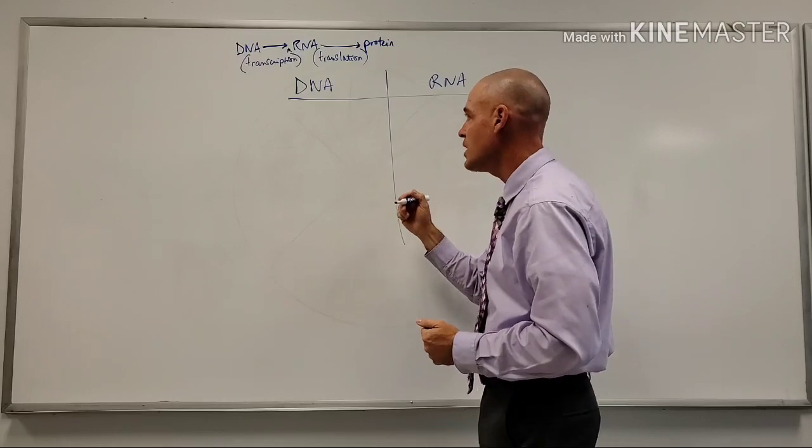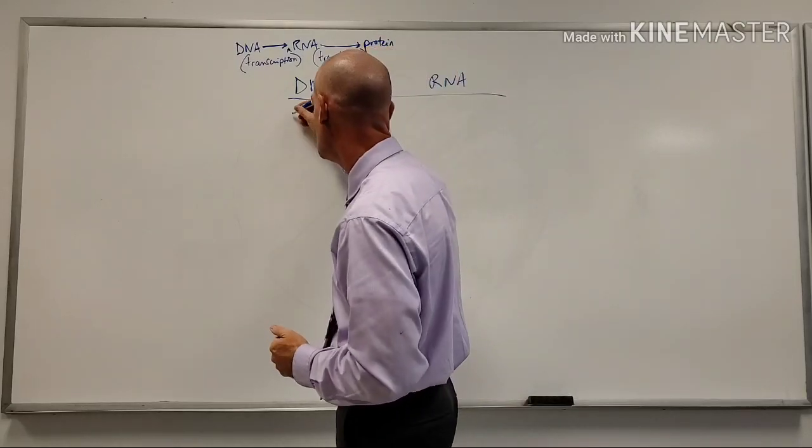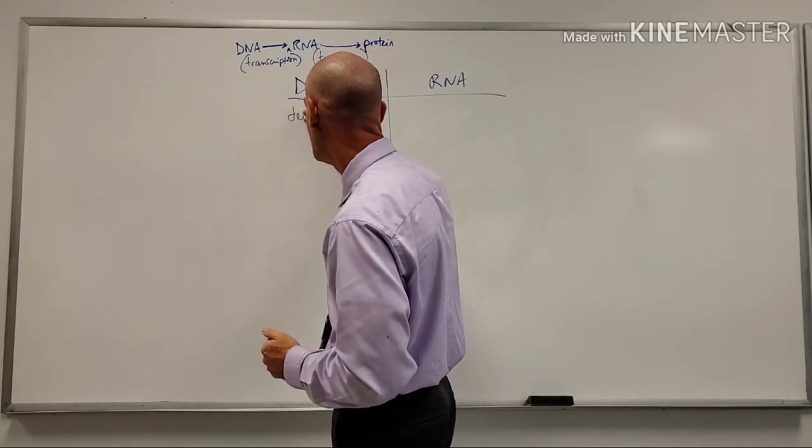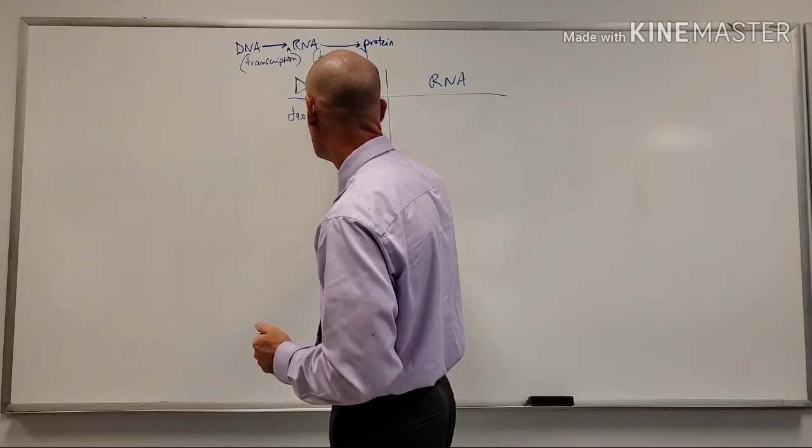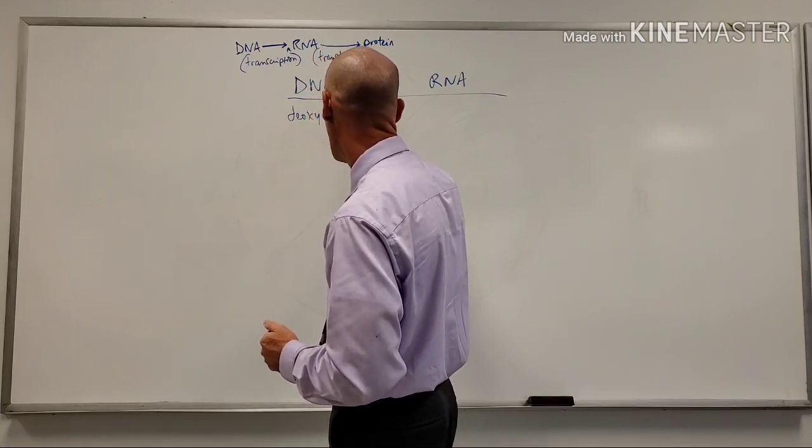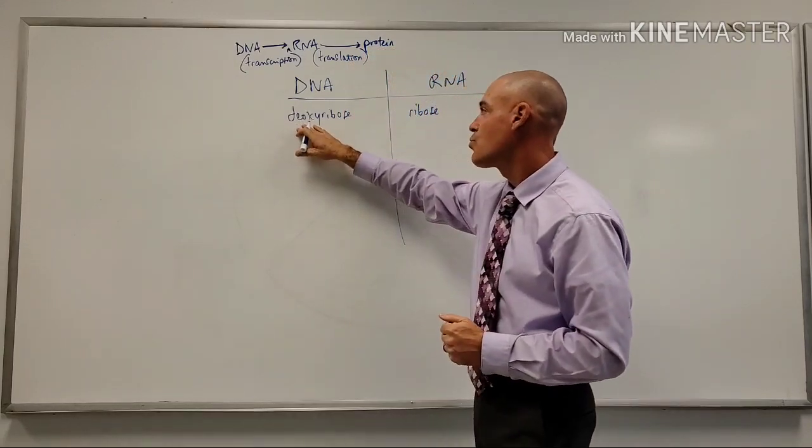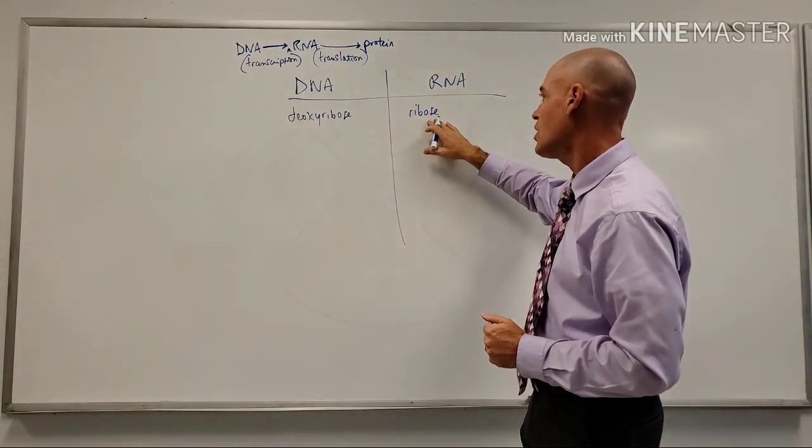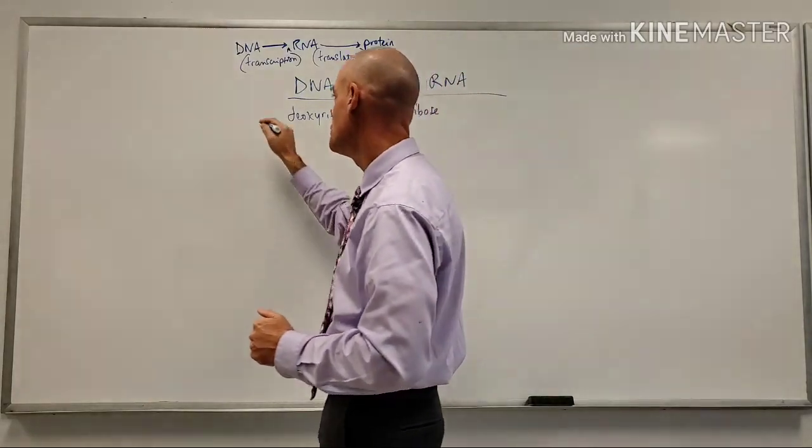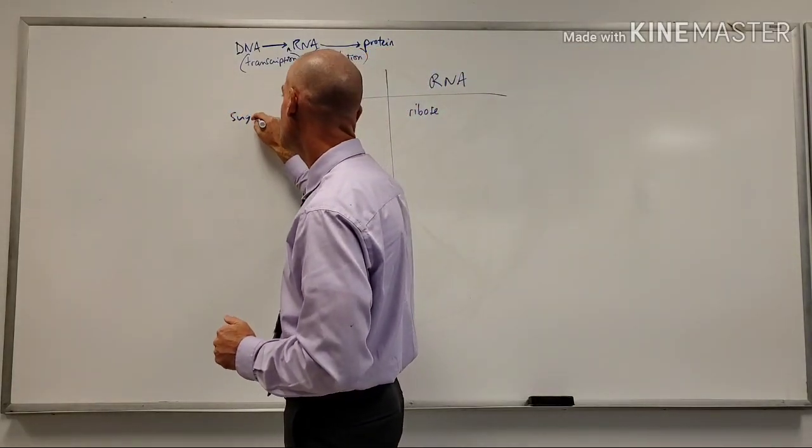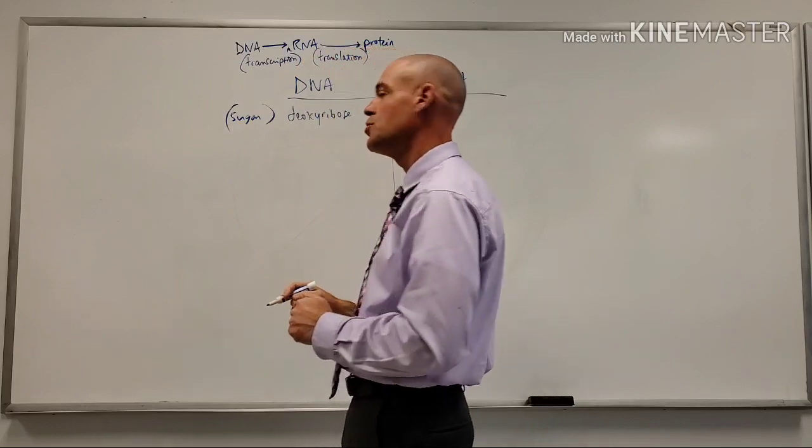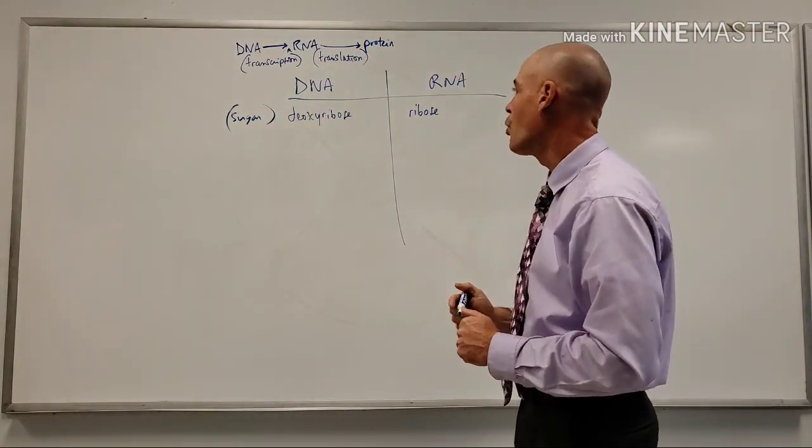So differences between DNA and RNA. Well, one big difference is the two different types of sugars. DNA is going to have the deoxyribose sugar, whereas RNA has the ribose sugar. So we see differences in the type of sugar for the two.